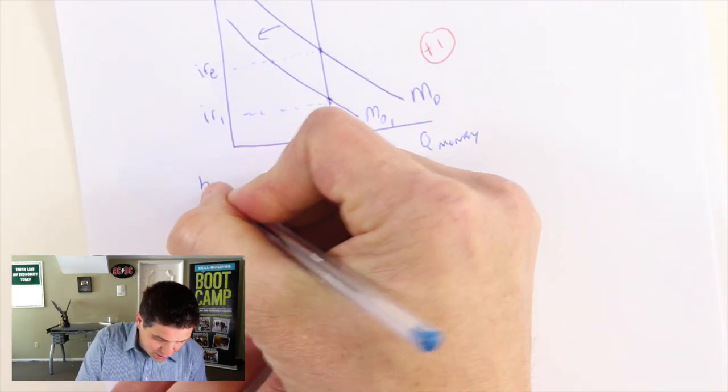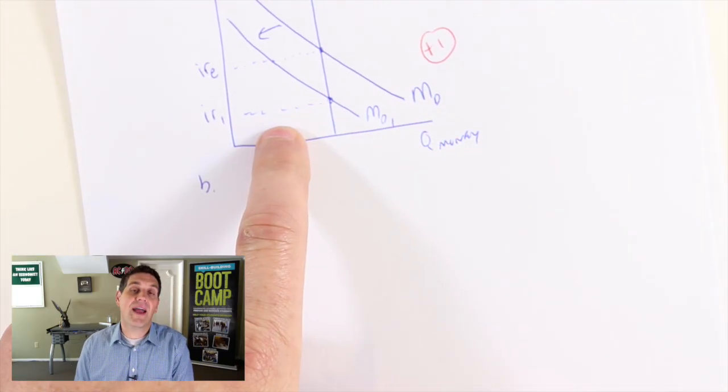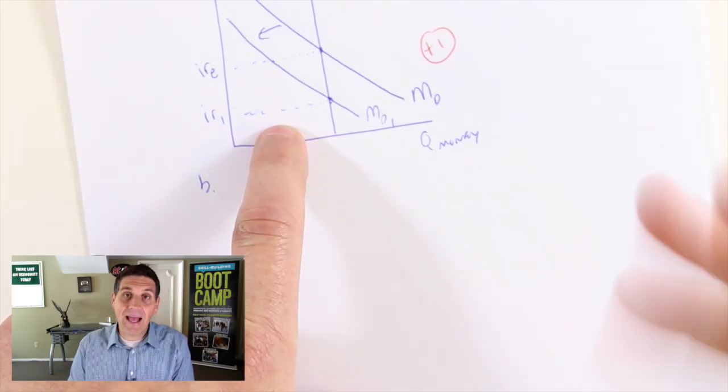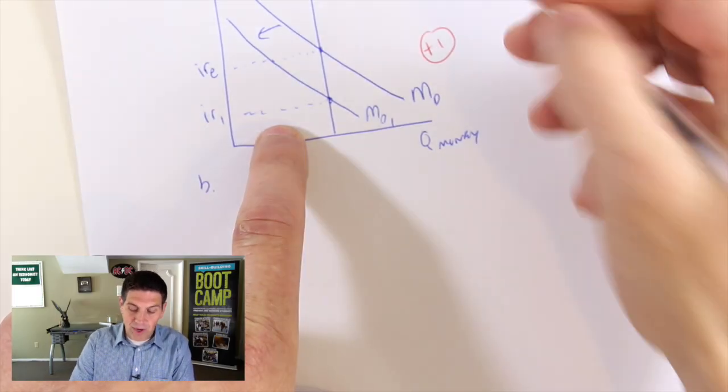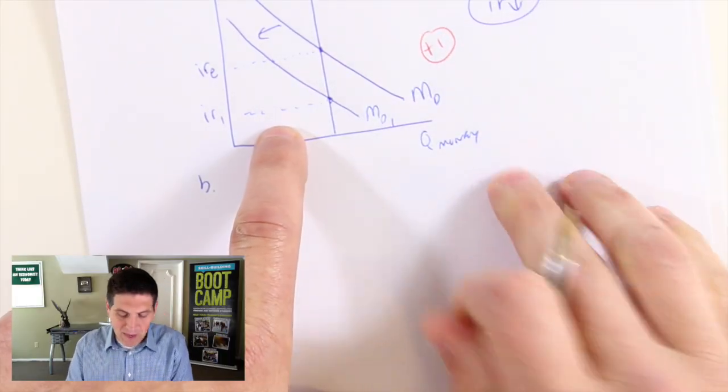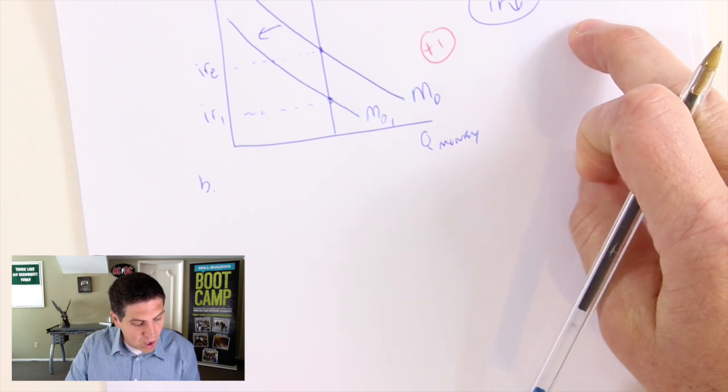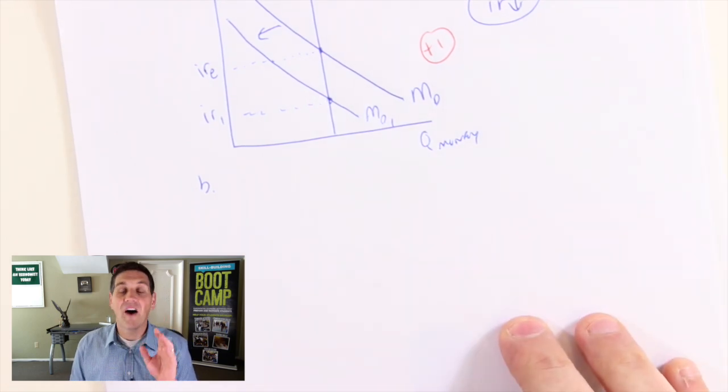In part B, the question asks: based on the interest rate you identified on the graph, what happens to bond prices? They didn't ask you to state it explicitly, but you should know from the graph that the nominal interest rate went down. That's the key information from part A.